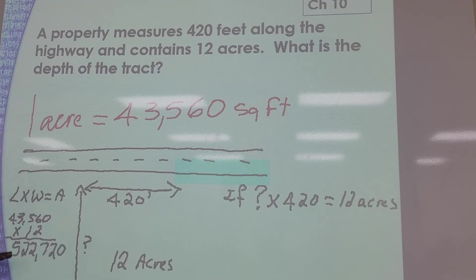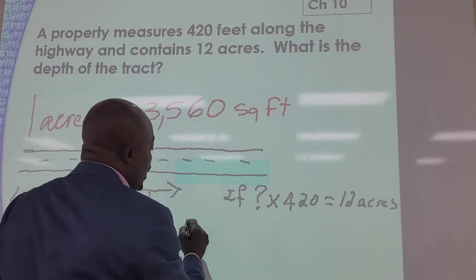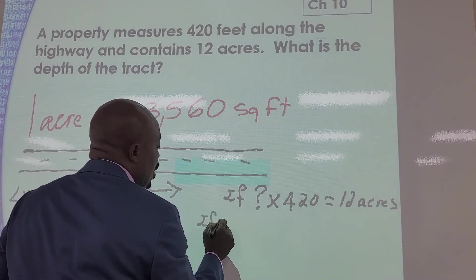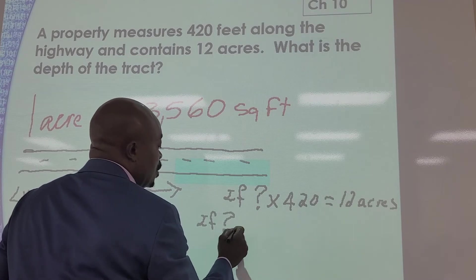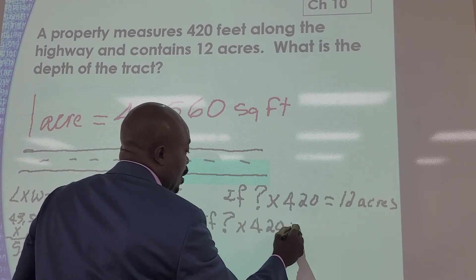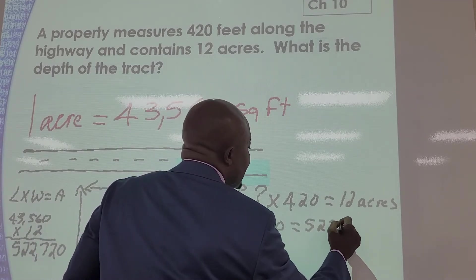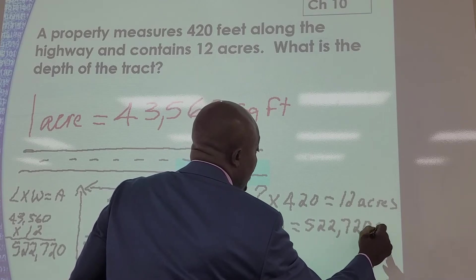So that would be 522,720. So we'll say, if unknown times 420 equals 522,720 square feet, then...